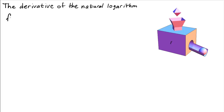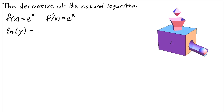The derivative of the exponential function f(x) = e^x is the function itself: f'(x) = e^x. The natural logarithm is the inverse of the exponential function. So we could write ln(y) as f inverse of f. Can we use this fact to figure out what the derivative of the natural logarithm should be?